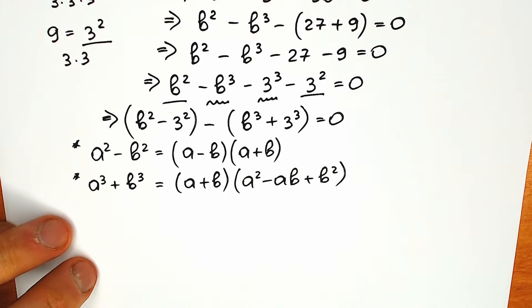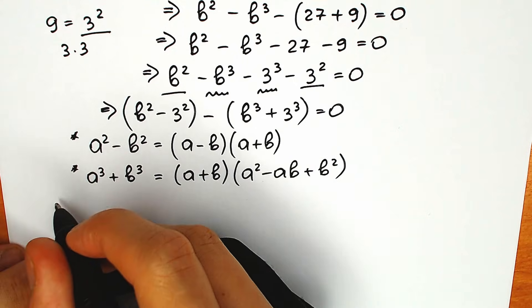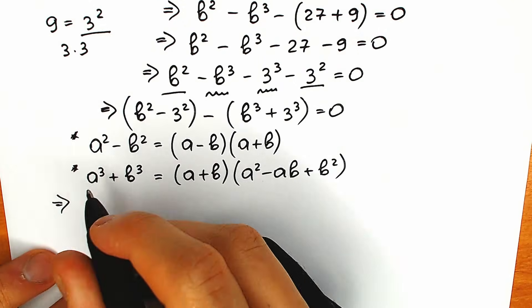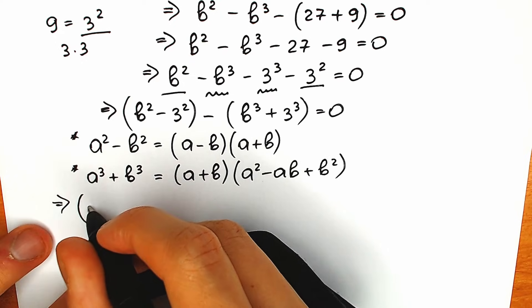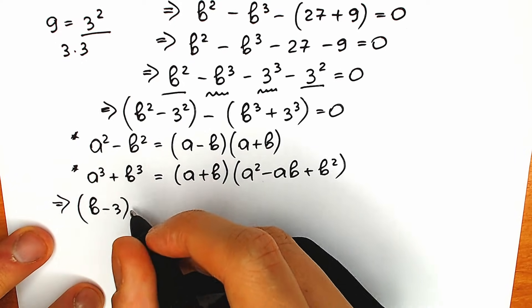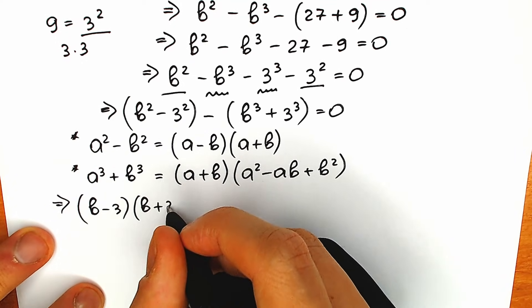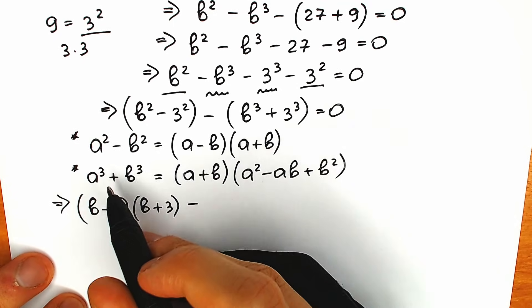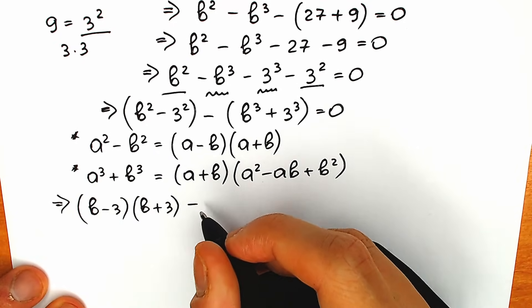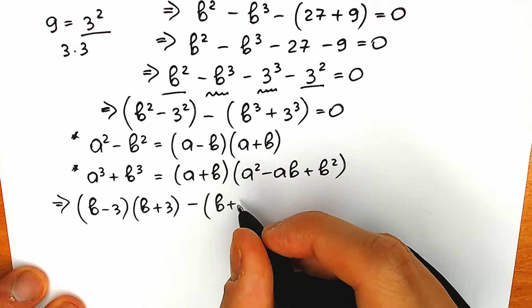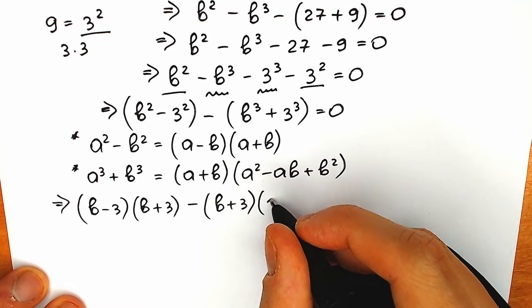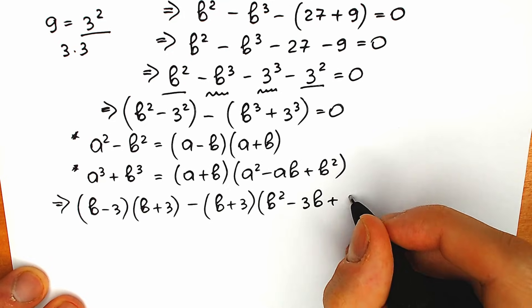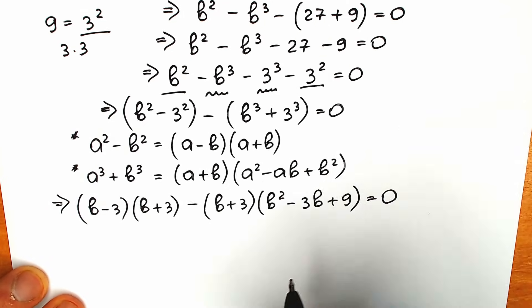Now let's apply these formulas — maybe we can factor something. Starting with the difference of squares: (b minus 3)(b plus 3). Then we have minus b cubed plus 3 cubed, which is the sum of two cubes, giving (b plus 3)(b squared minus 3b plus 9), equal to 0.